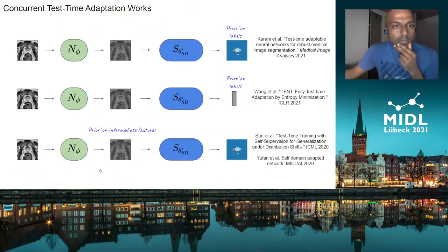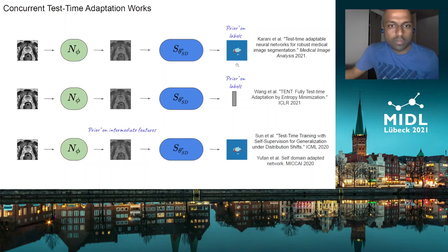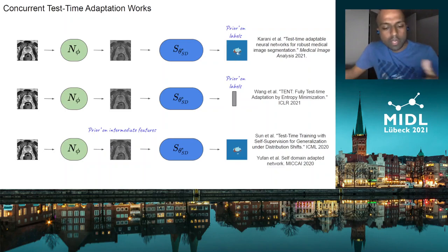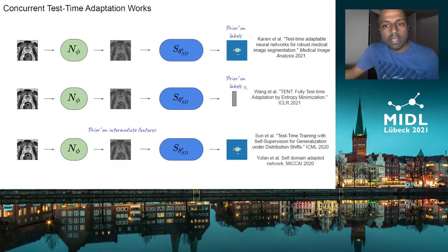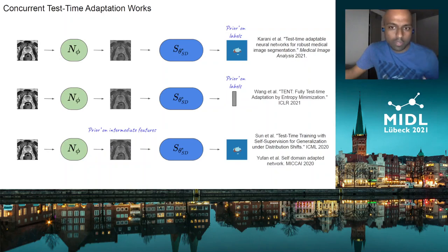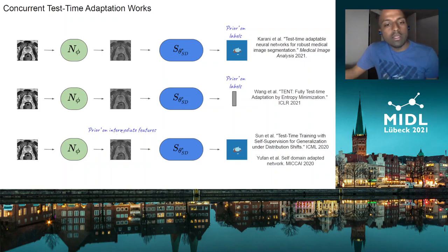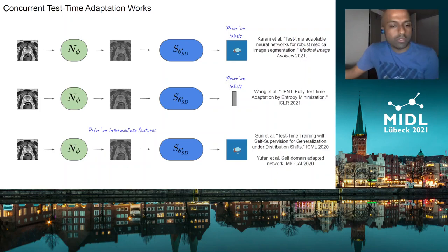Finally, we highlight some concurrent test-time adaptation work, as this idea has been coming up quite frequently in the past year. Our work puts an implicit prior in the label space of segmentation labels and uses this prior to drive adaptation at test time. A paper at ICLR did something similar for image classification, using confidence as the prior — minimizing the entropy of the prediction. A couple of other works placed priors in an intermediate feature space, training self-supervision networks or autoencoder-type networks to achieve this.